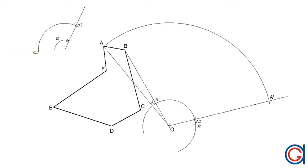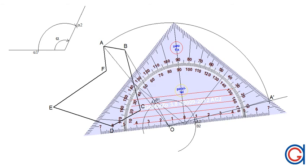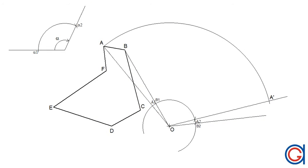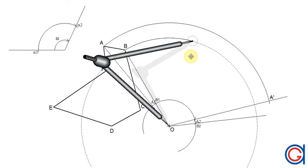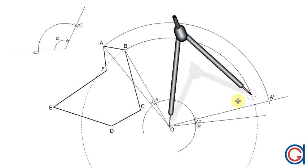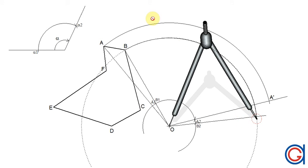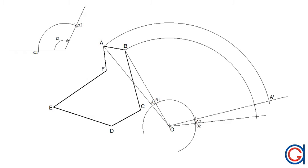The next step is to join the center point O to the new point B2 and elongate the line as shown here. Then we set the compass on the center point O and with a radius OB, we scribe an arc to the right until it cuts the previously drawn elongated line at a new point which we will call B prime. B prime is the rotation point of point B.